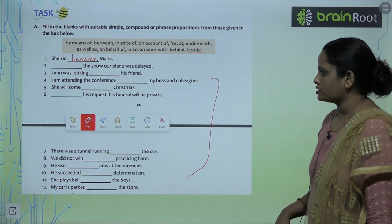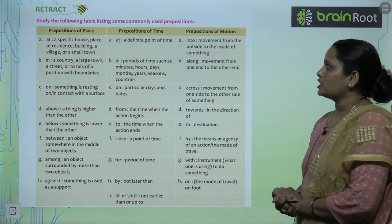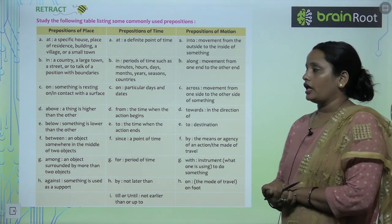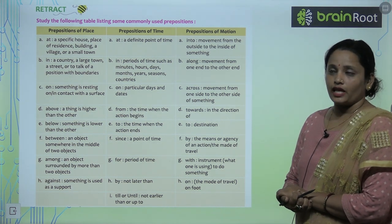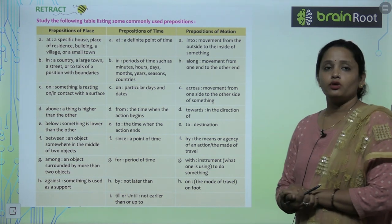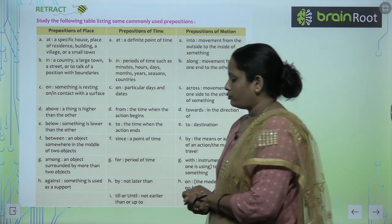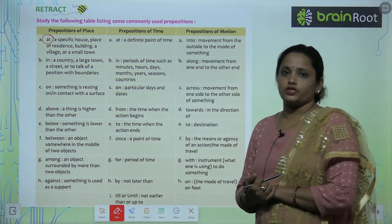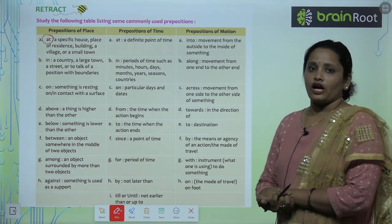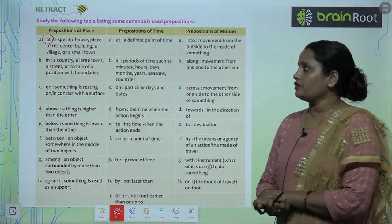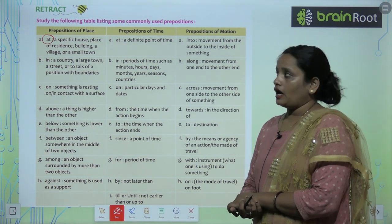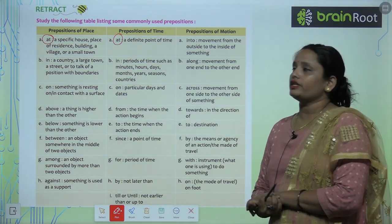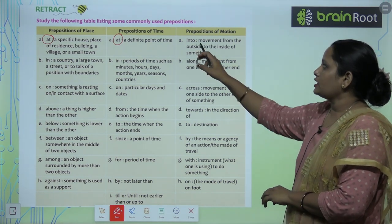Study the following table listing some commonly used prepositions. Here you have a table of prepositions of place, prepositions of time, and prepositions of motion. The first preposition is 'at' — used for a specific place of residence, building, or small town. 'At' is also used for a definite point of time.